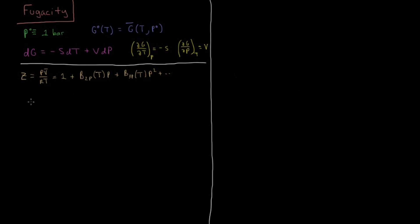Solving for molar volume, we multiply both sides by RT/P to get V̄ by itself. So the molar volume V̄ equals RT/P, plus RT·B2P(T), plus RT·B3P(T)·P, plus RT·B4P(T)·P², and so on — each successive virial term contributing a higher power of pressure.